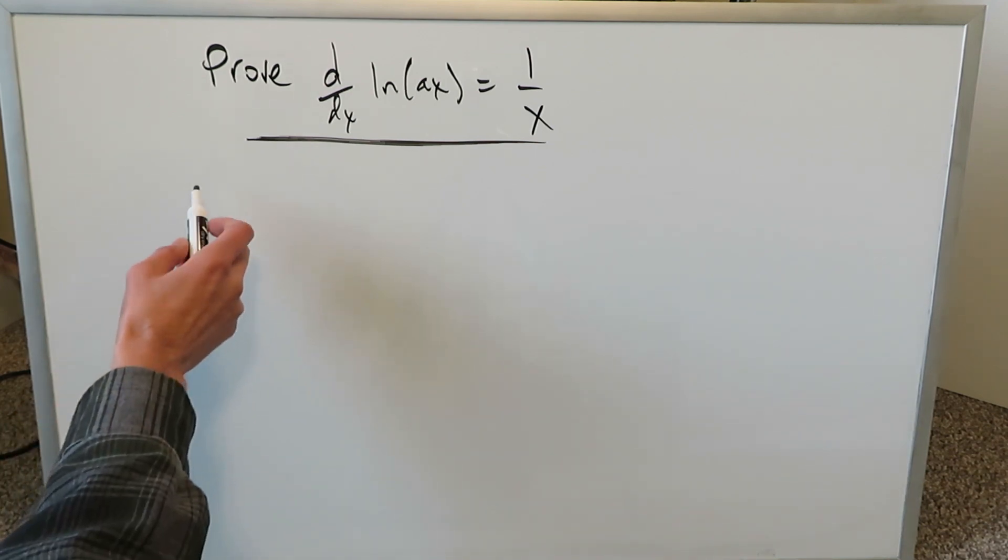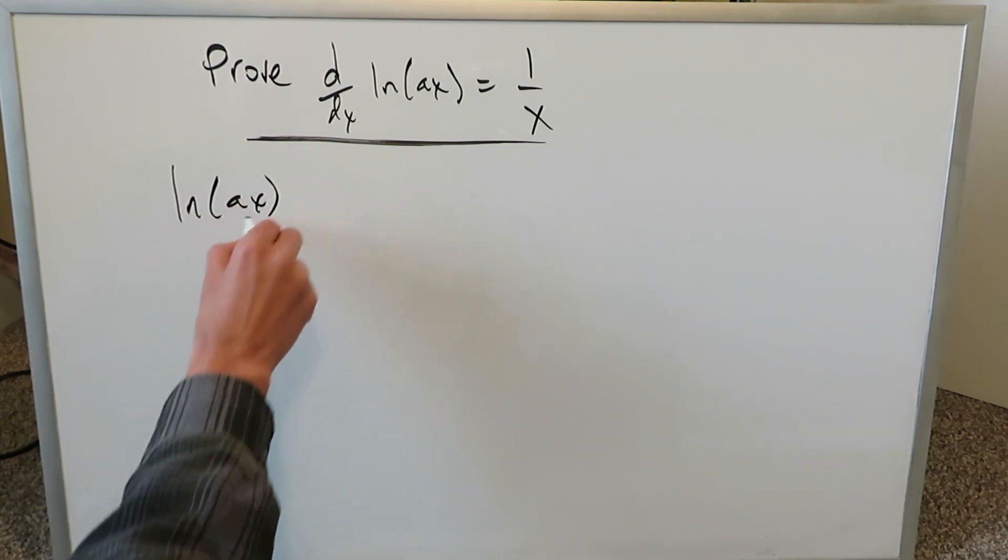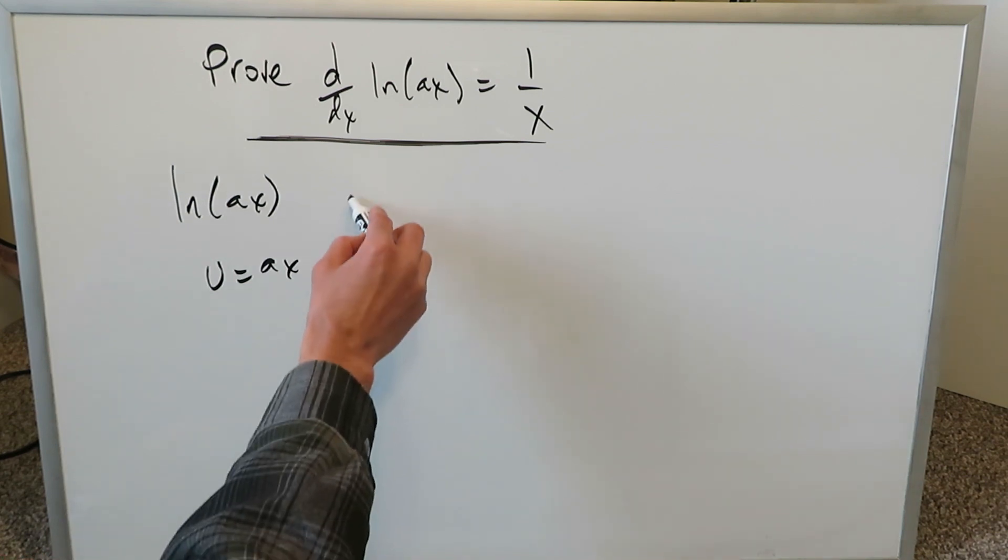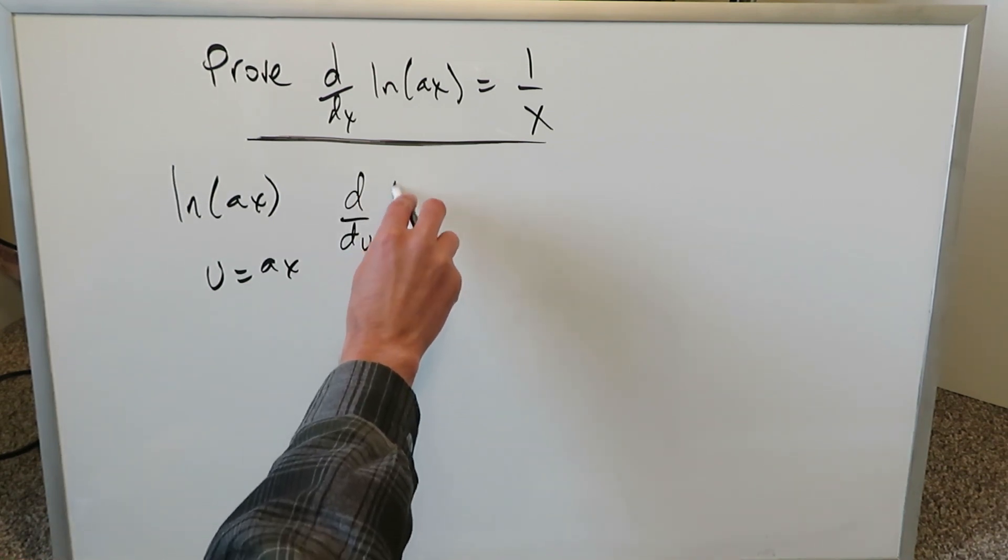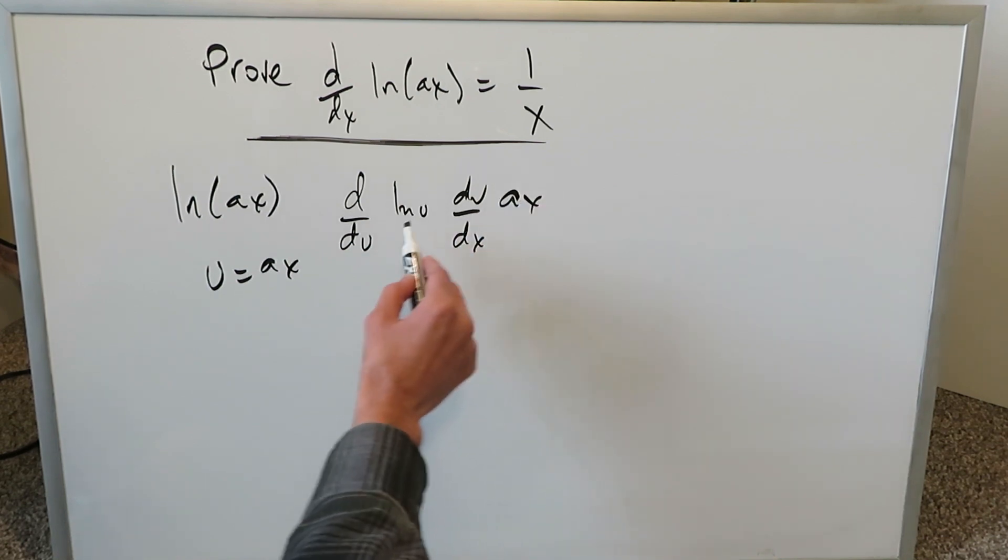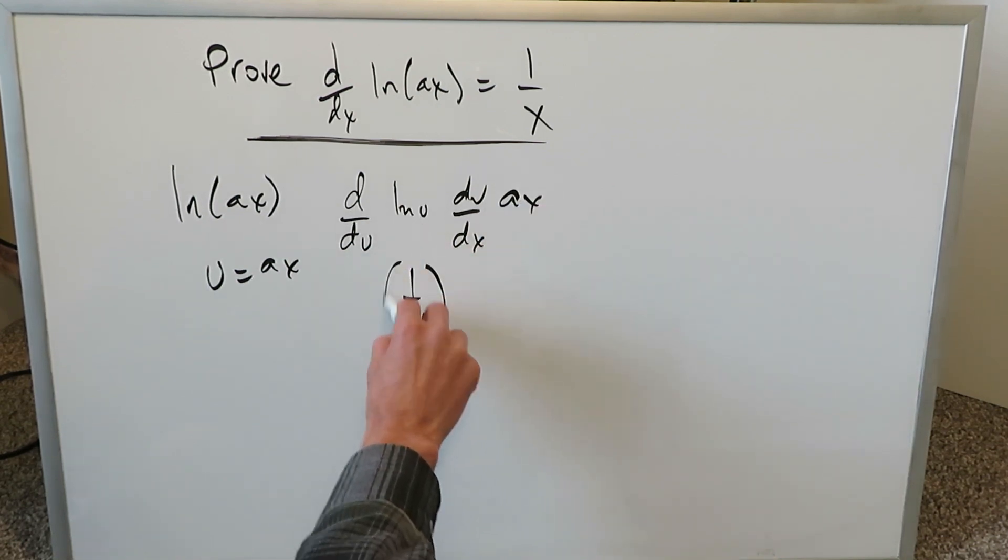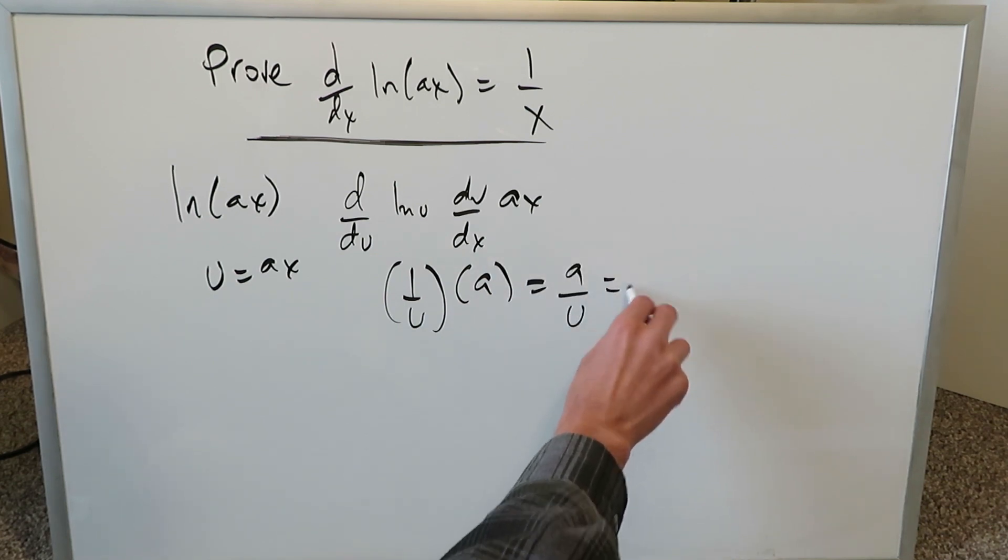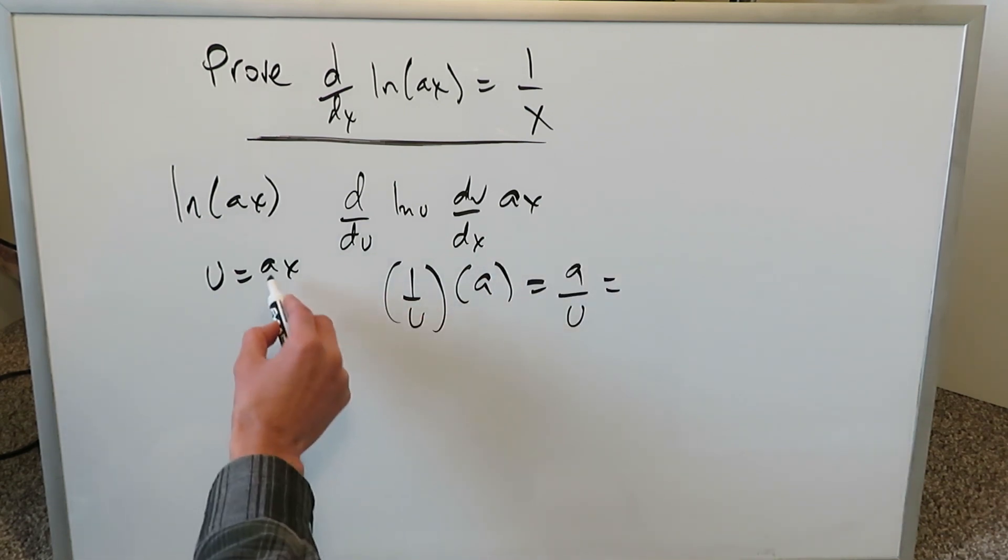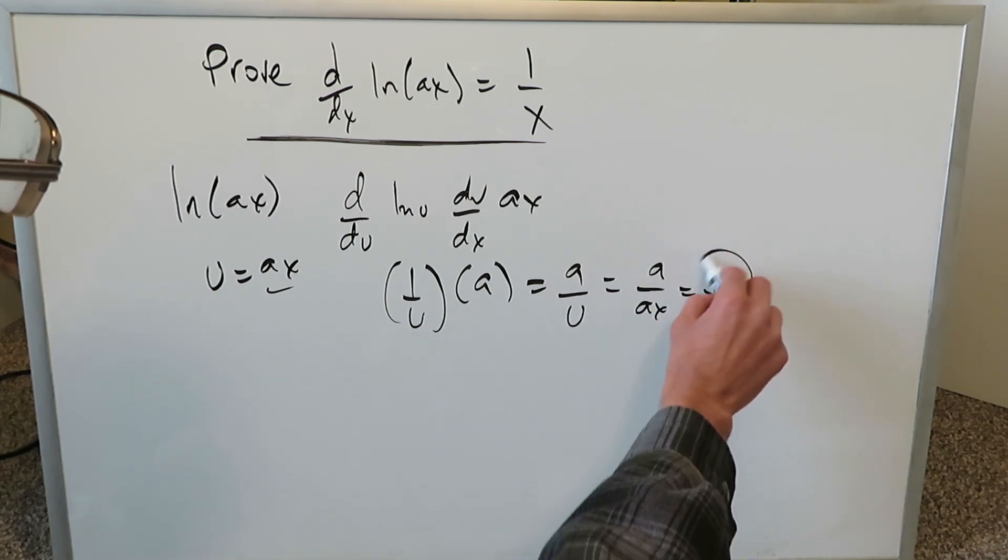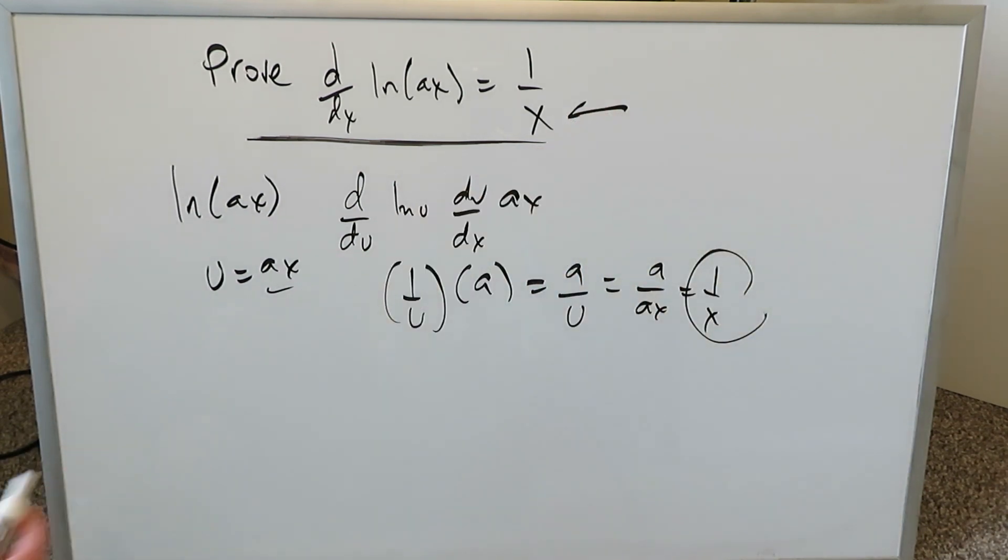Very simply, if you have something like this ln(ax) and let u equals ax and then you employ the chain rule d over du ln(u) and then du dx ax. This will come out as 1 over u and this here will come out as just an a and then you'll have a over u. When you resubstitute the u item which was this, you have a over ax and you get 1 over x which very easily shows that.